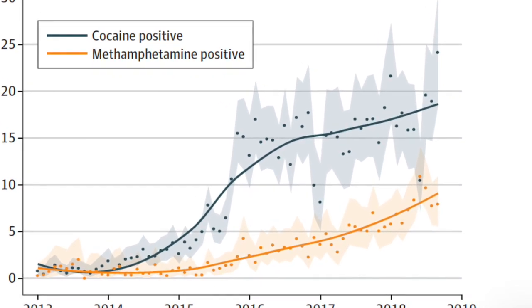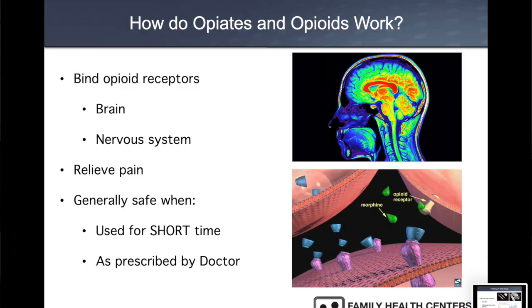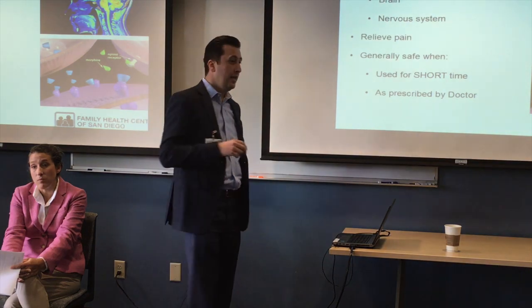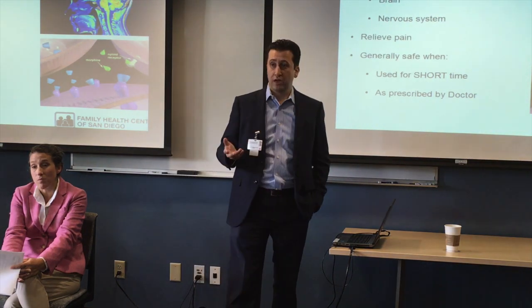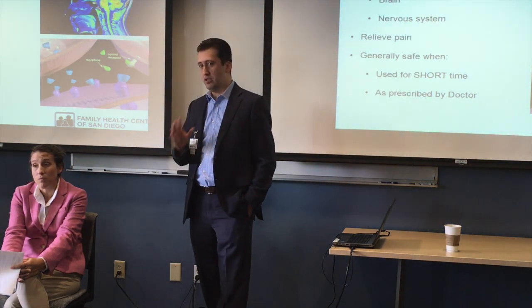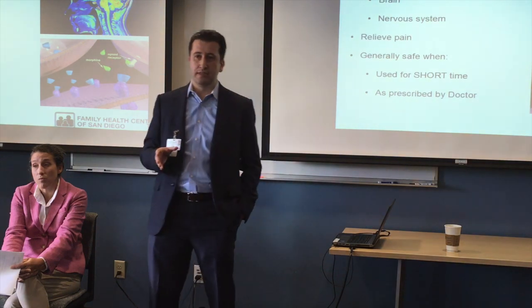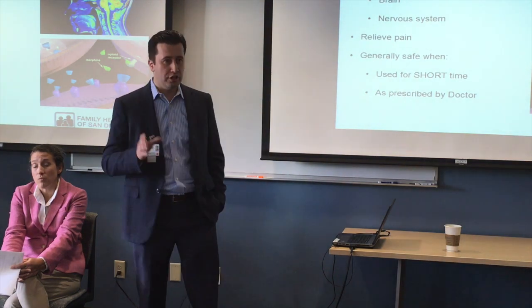How do opioids work? They bind to receptors in the brain and nervous system, primarily the spinal cord, and you notice a certain response — most of us know what that is: pain relief. In general, if you're prescribed an opioid for a short period of time — and the key word is 'short' — and for doctor's orders as prescribed, you're generally safe. The risk isn't zero; there's always a risk of taking an opioid, but generally it's safe.